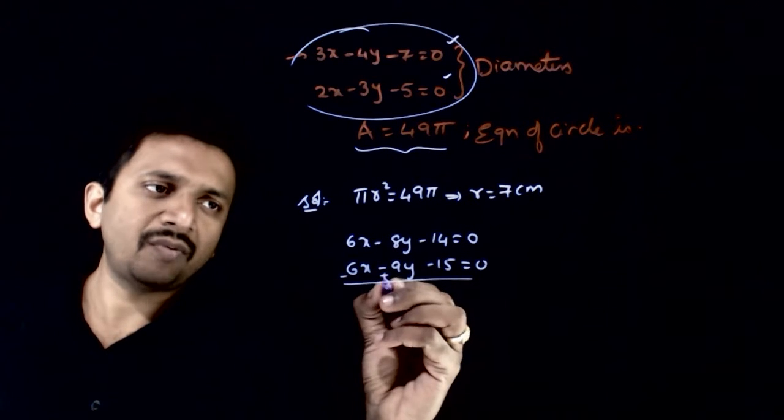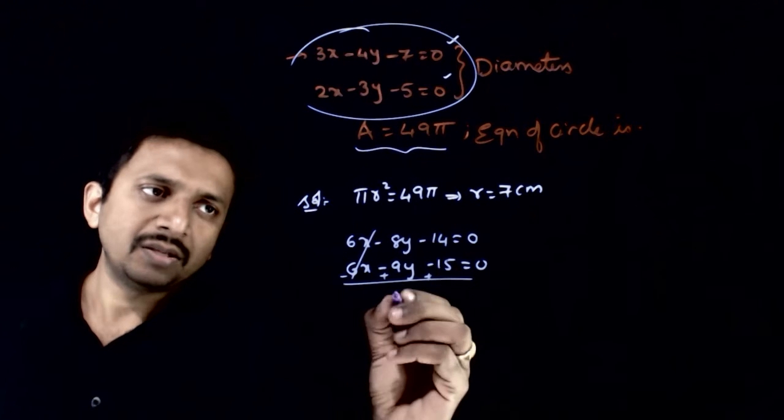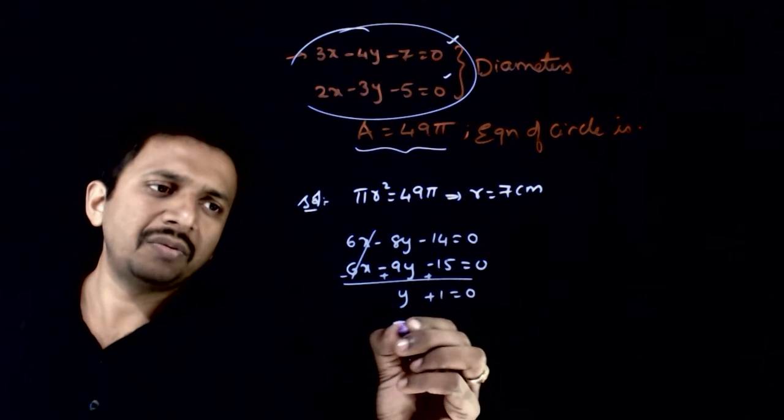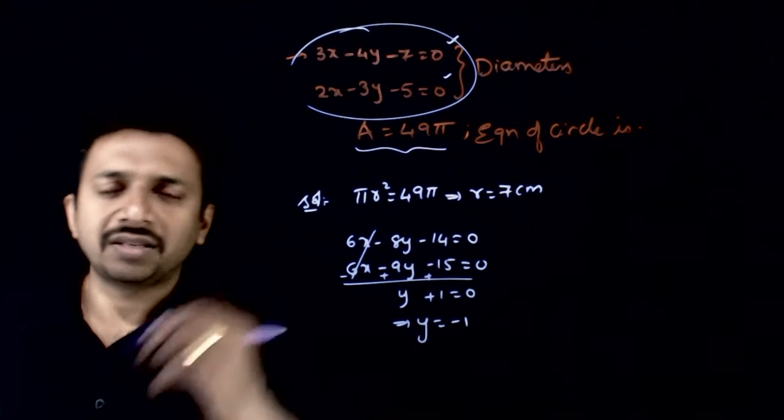If I subtract one equation from the other, y + 1 = 0, so y = -1.